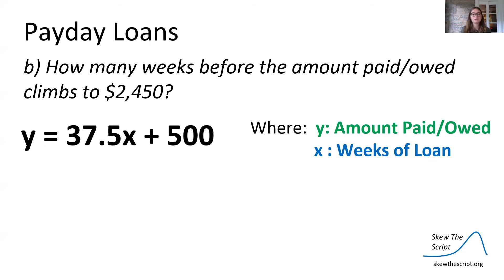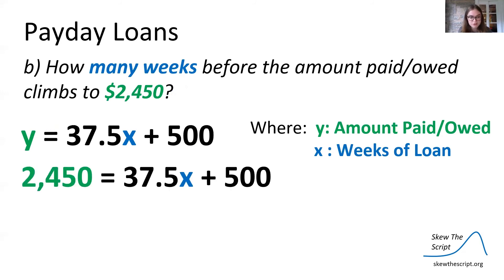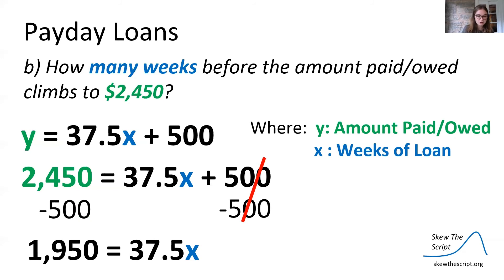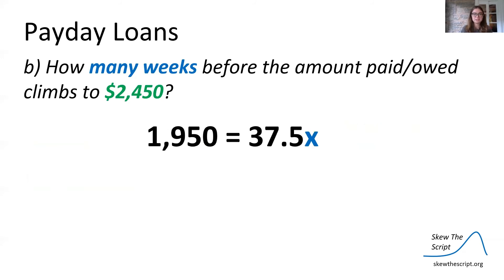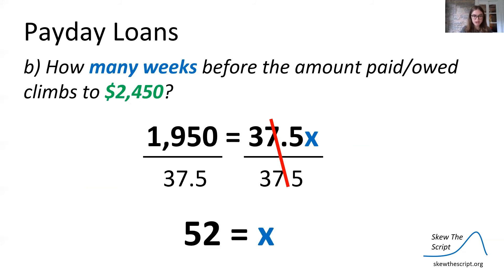How many weeks before the amount paid slash owed climbs to $2,450? This time we're working backwards — we're given the amount paid slash owed and asked how many weeks it will take to reach that amount. We plug in 2,450 for y and solve for x. Subtract 500 from both sides to get 1,950 equals 37.5x. Divide both sides by 37.5 and we get x equals 52. After 52 weeks — one year — the total amount paid slash owed is $2,450.